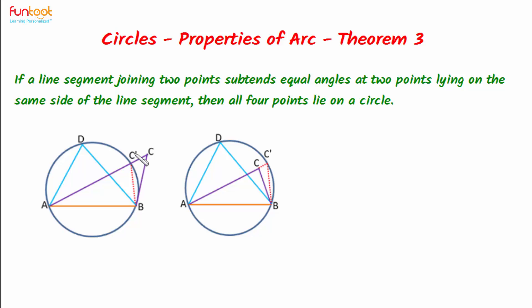In the first case, point C dash lies on the circle, and this point is also on AC. In the second case, we extend AC to AC dash, so that AC meets the circle at point C dash. In both cases, angle BC dash A — that means this angle here and this angle here — are equal to angle ADB. As these angles lie in the same segment, and angles lying in the same segment are equal.